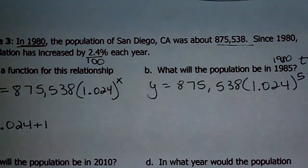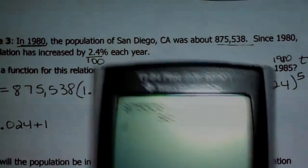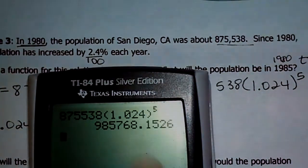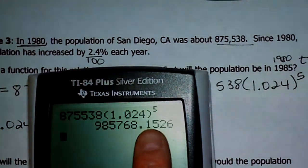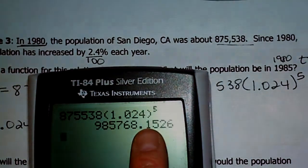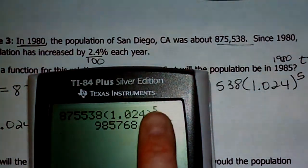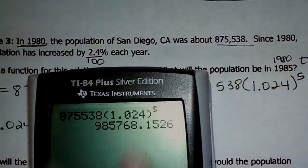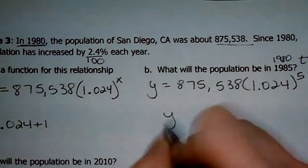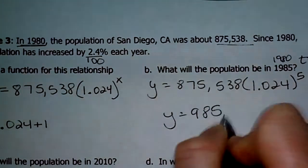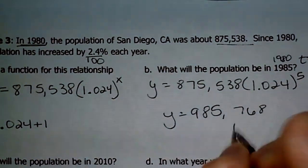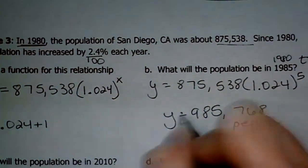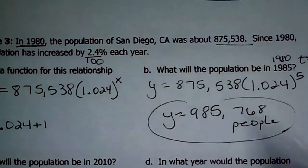Alright, when you type it in, I'm guessing you got a decimal because so did I. We're talking about people, though, right? So when you see this decimal, I want to round it to the nearest whole number. So I'm going to look at the tens place here. The number next to the 8 is 4 or less. So that means I'm going to leave the 8 alone. So you end up with 985,768. And it's people. Alright.